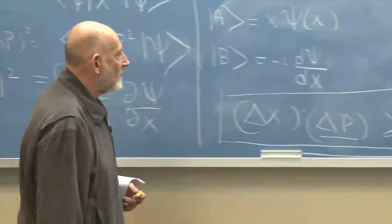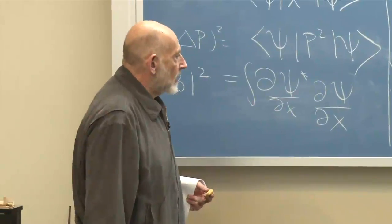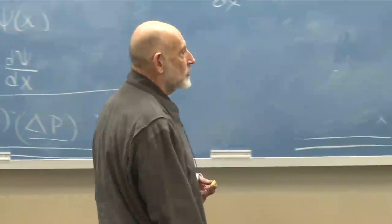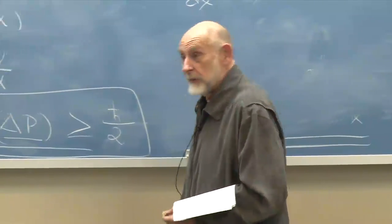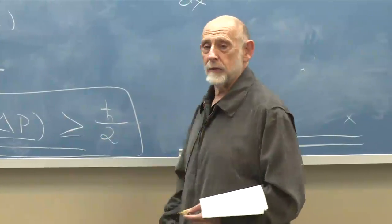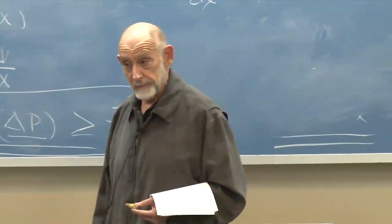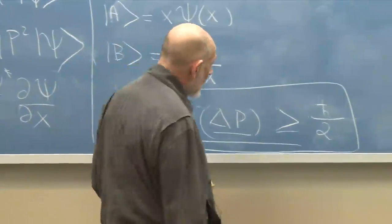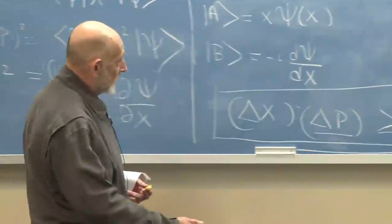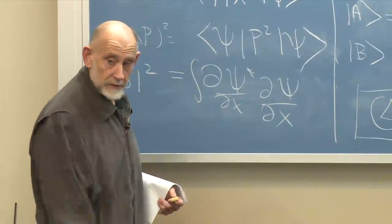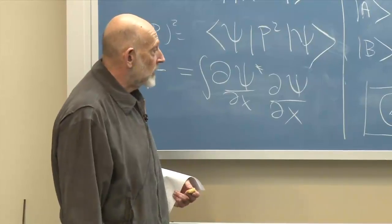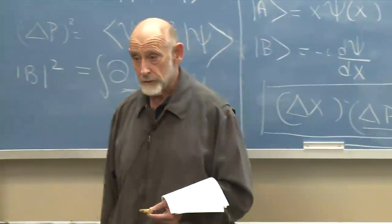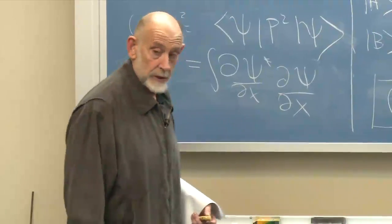On the greater-than versus greater-than-or-equal-to point: when you prove that something is bigger than something else, you can ask whether it can ever be equal. We may have proved an inequality that was not the tightest possible. In this case, you can find wave functions for which delta x times delta p equals h-bar over two — those are called minimal uncertainty wave packets. So it's not a trivial point.